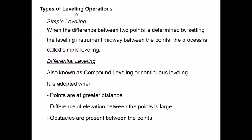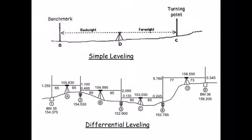The different types of differential leveling include simple leveling and differential leveling. In simple leveling, the instrument is placed exactly midway between the two points for the backside and foresight readings. In differential leveling, multiple measurements are taken and the points can be at random distances from the instrument — the instrument can be placed anywhere. This is the key difference between simple leveling and differential leveling.